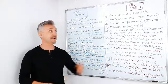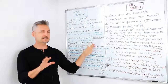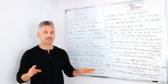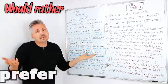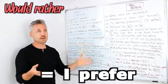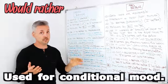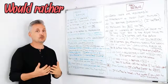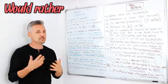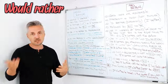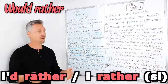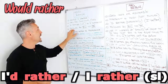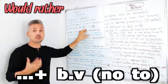That's right — 'would rather' and 'had better'. This seems a little bit complicated, but when I explain it to you, you'll understand, I'm sure. So let's take a look at 'would rather'. It equals 'I prefer' — that's all. 'Would rather' is used for conditional mood. When we speak to someone, we wouldn't say 'I would rather'; we just say 'I'd rather', which is more slang. It is usually followed by the base form of the verb without 'to'.